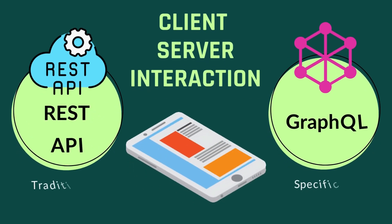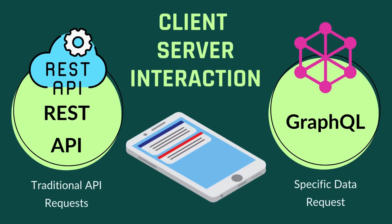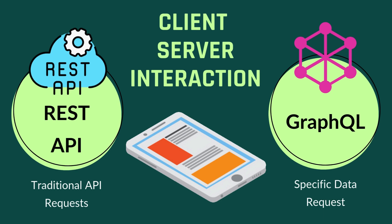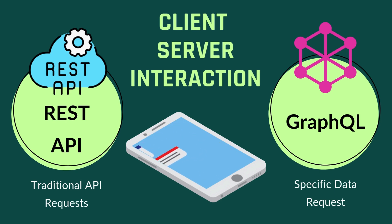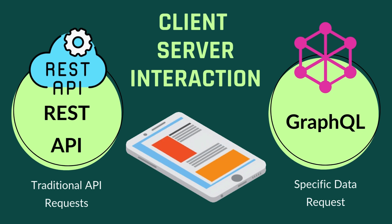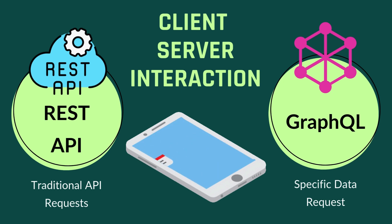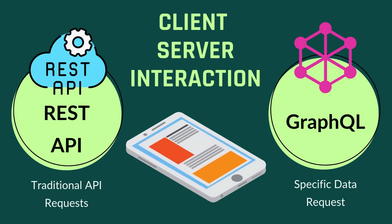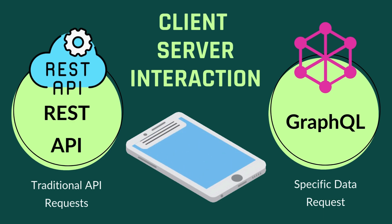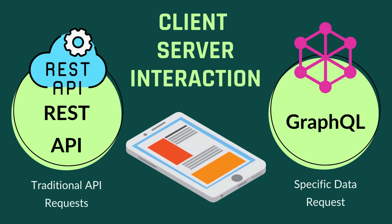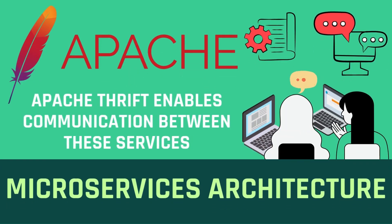For client-server interaction, Facebook relies heavily on GraphQL and REST APIs. GraphQL allows clients to request exactly the data they need, reducing overfetching and improving performance — it's like ordering only the specific toppings you want on your pizza. In contrast, REST is like a buffet where you take everything available. While it gives you variety, you might end up with more data than you really wanted, leading to overfetching and less efficient performance.